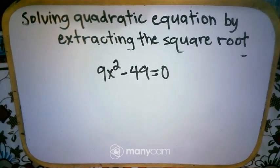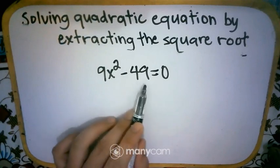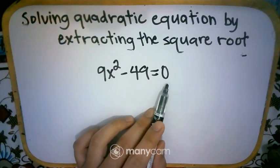This will be our last example for this topic. We have 9x squared minus 49 is equal to 0.